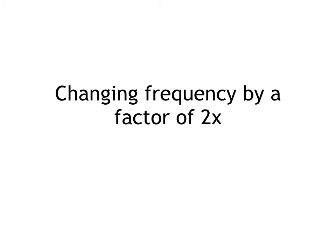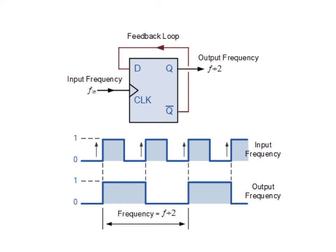A D flip-flop can also be used to change the frequency by a factor of 2. The wave whose frequency has to be halved is given as the clock. At the first positive clock edge, the clock value is 1, so this becomes the output value, which stays 1 until the next positive clock edge. At the next positive clock edge, the clock value is 0, this becomes the output, and so the frequency is halved.